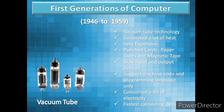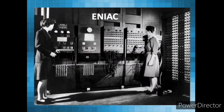That is why input and output was slow. Computers in this generation used machine code as a programming language, and they consumed a lot of electricity. Examples of first generation computers were: first, ENIAC;